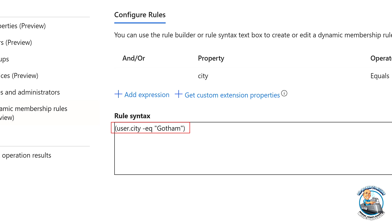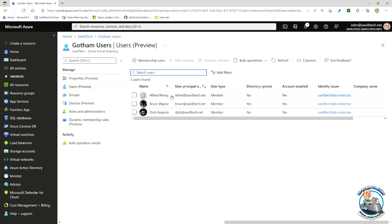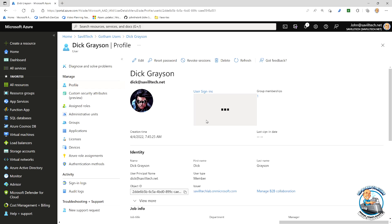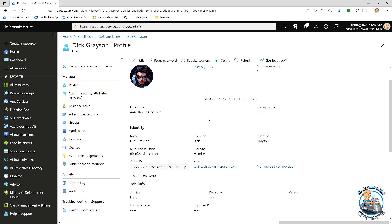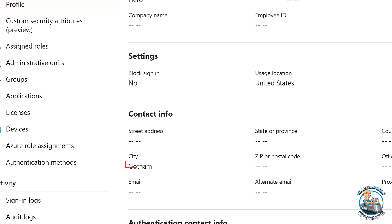Again, you could do far more advanced things. I could base it on custom extension properties. There's a whole set of things I can do. But it's now a rule that defines if I'm in this administrative unit or not. And so what I can see if I look at my users, I've got three users in here. Alfred, Bruce and Dick Grayson. All of those users, if I was to just look at one of them, in their profile, their city is Gotham.